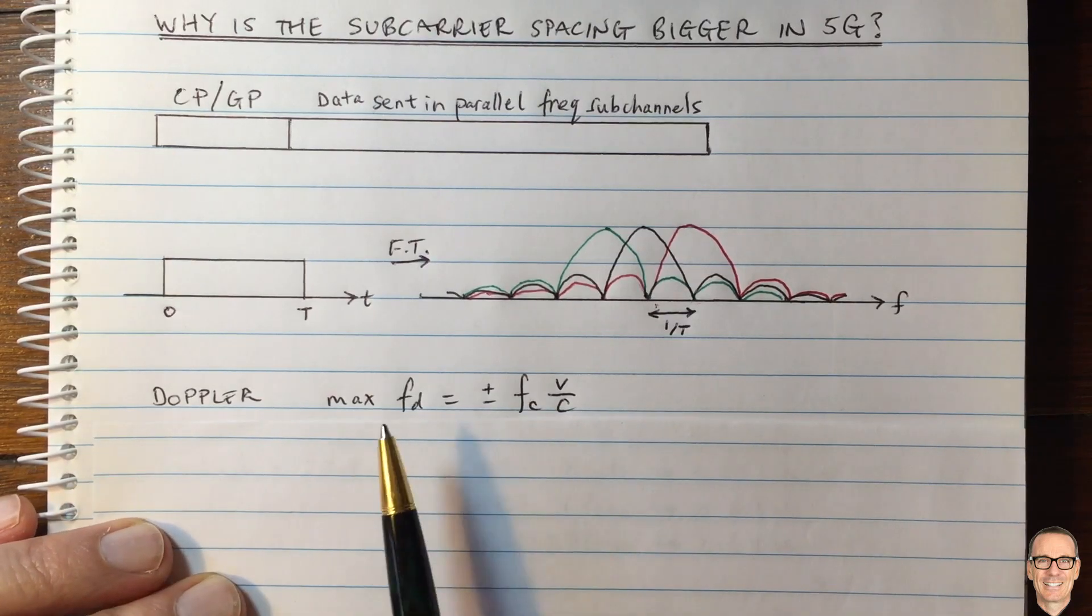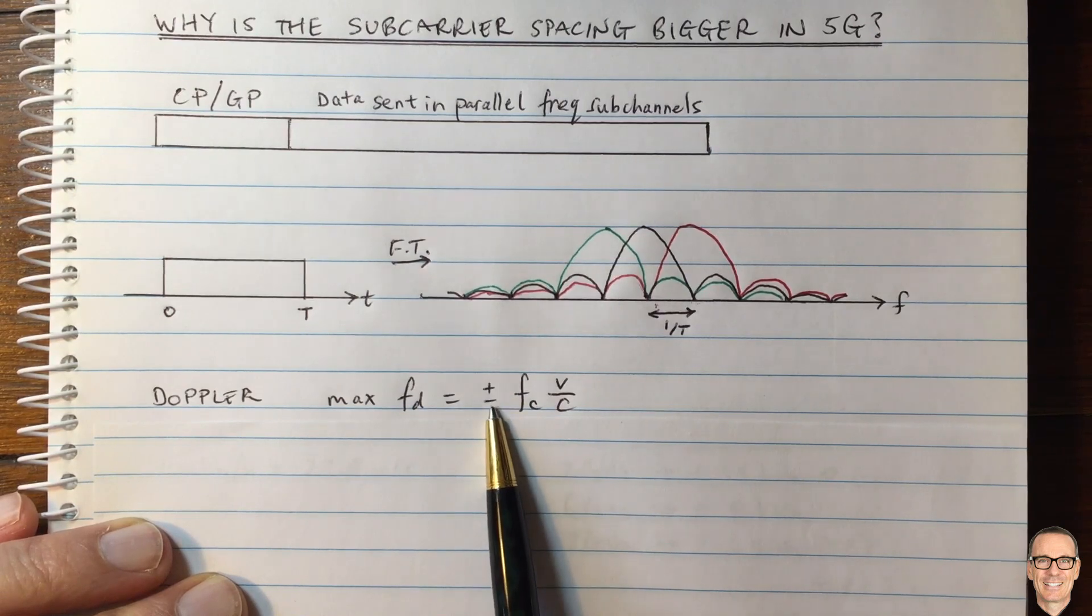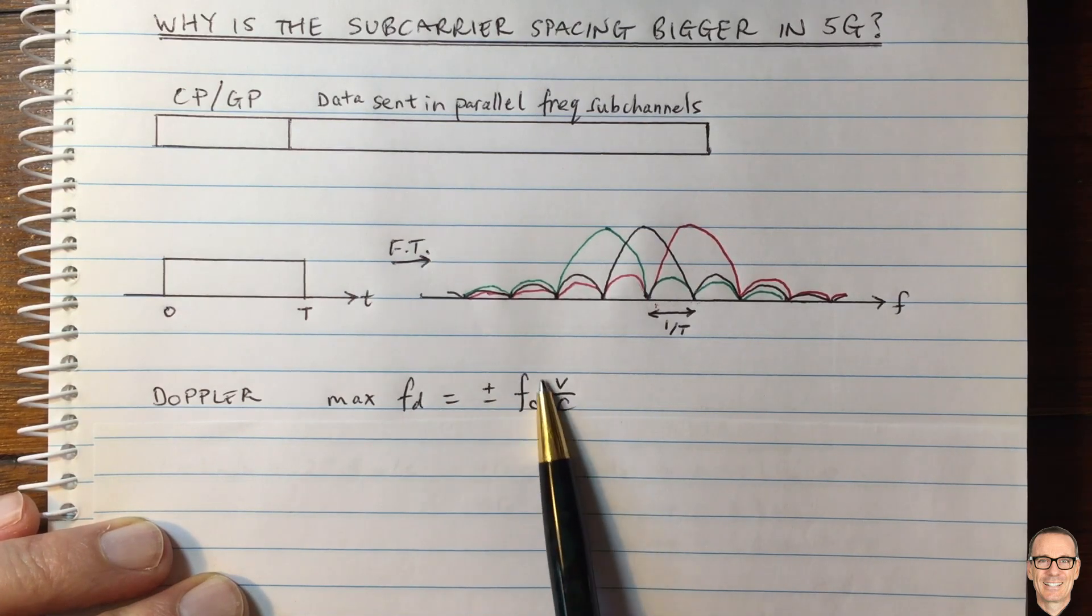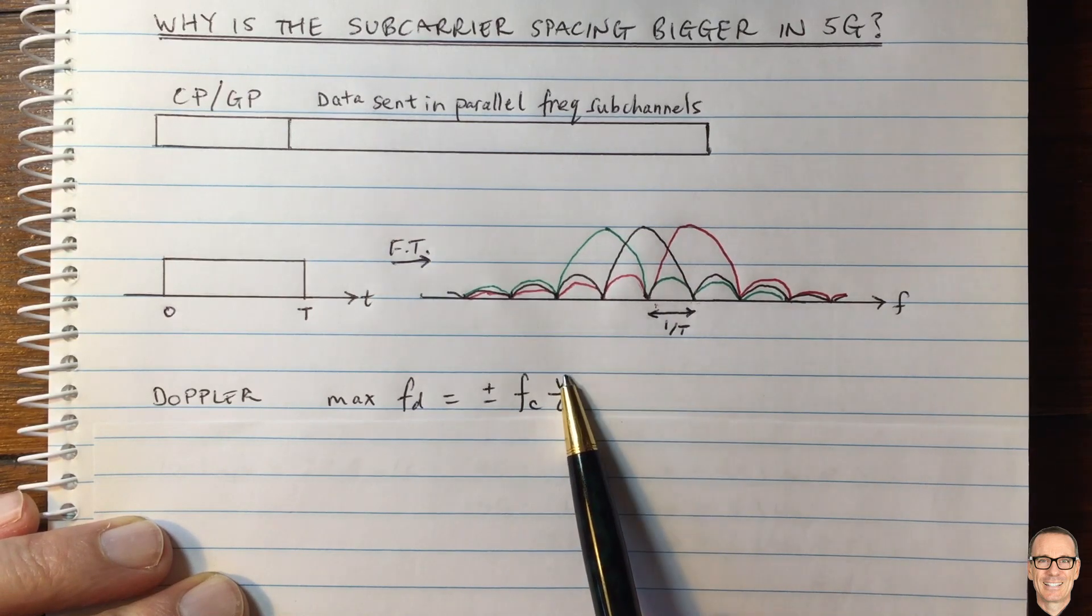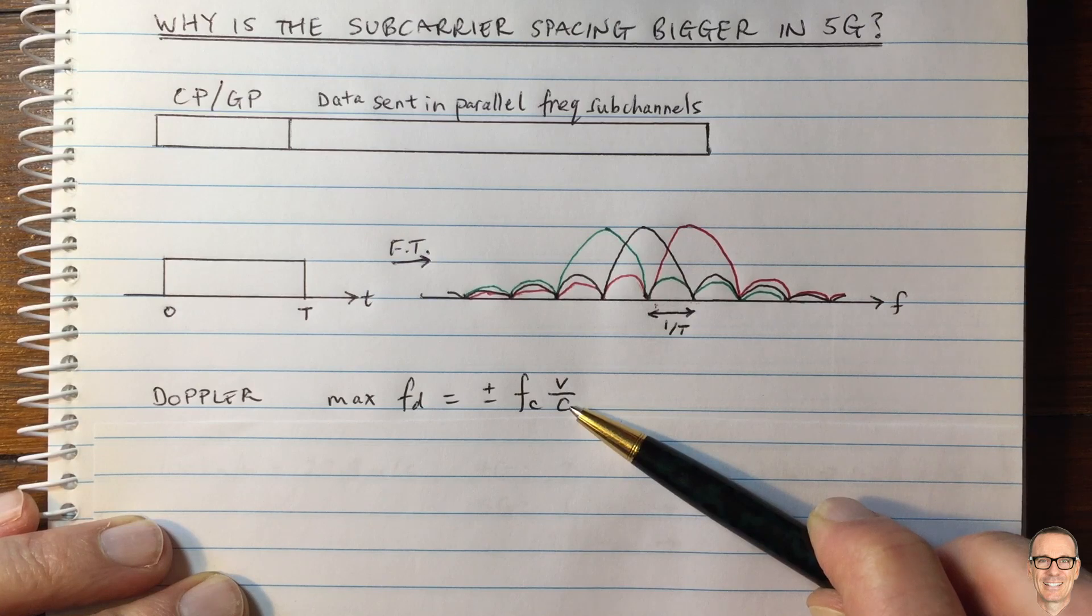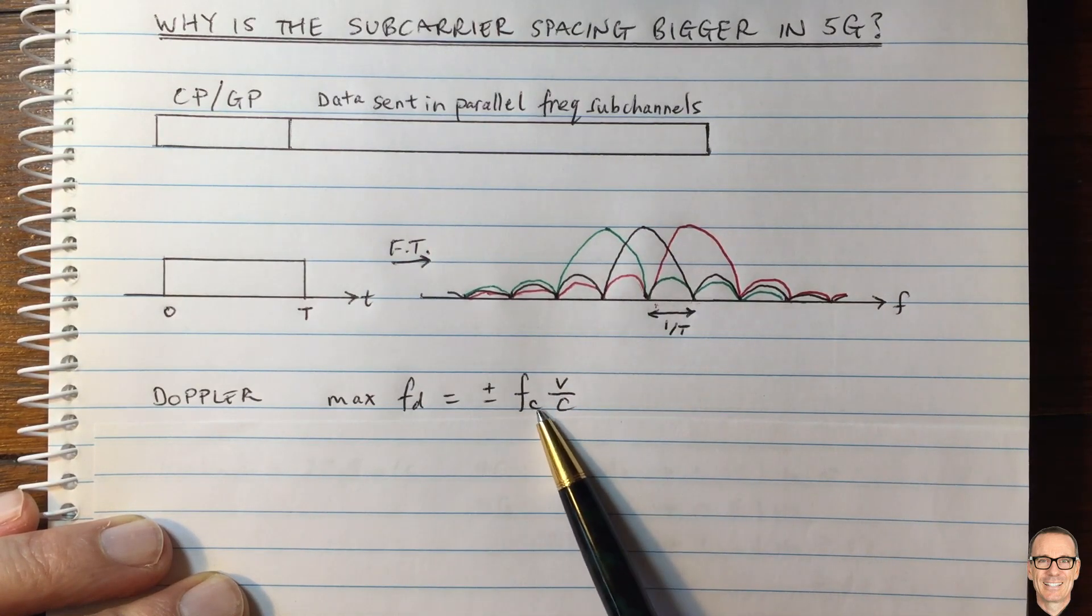Okay, so here's Doppler. And here's the formula for the maximum Doppler. It'll be either a positive or a negative shift, depending on the path directions relative to the user. And the maximum shift is given by the carrier frequency, FC, times the ratio of the velocity of the moving vehicle, divided by the speed of light. And so this C here is the speed of light. This C here is for the carrier.